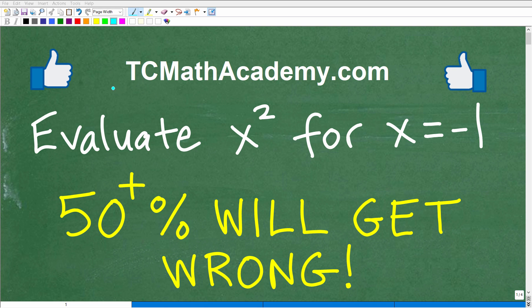Hello, this is John from TC Math Academy, and what I have for you here is seemingly a pretty basic algebra problem. We want to evaluate the expression x squared for x is equal to negative 1.